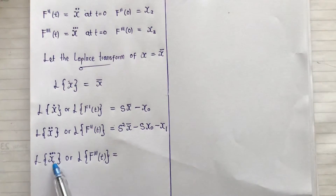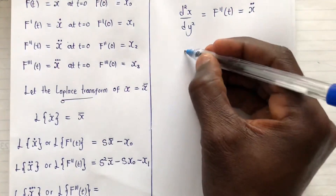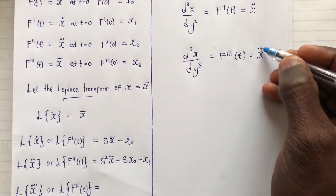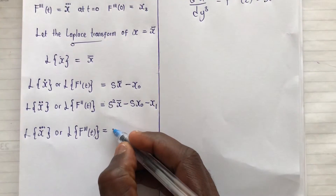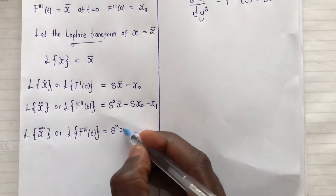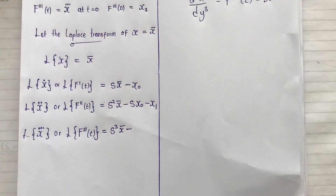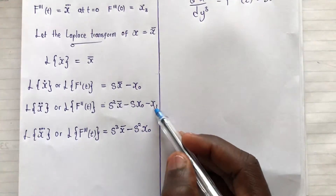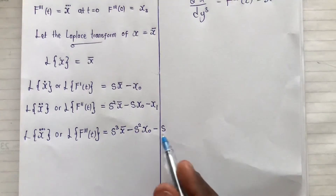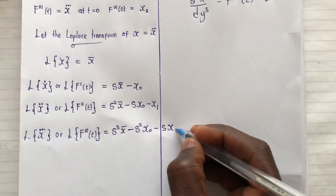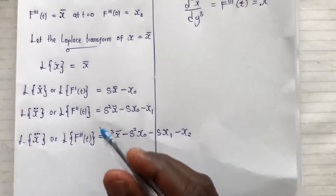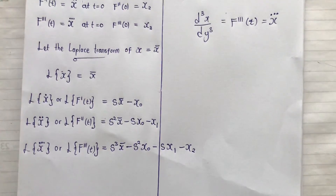Finally, the Laplace transform of x-triple-dot, the third derivative: we cube s because for the third derivative d³x/dy³ equals f'''(t). So the result is s³ times X̄, minus s² times x₀, minus s times x₁, minus x₂. So: L{x⃛} = s³X̄ - s²x₀ - sx₁ - x₂. You can continue this pattern to the fourth derivative and beyond.